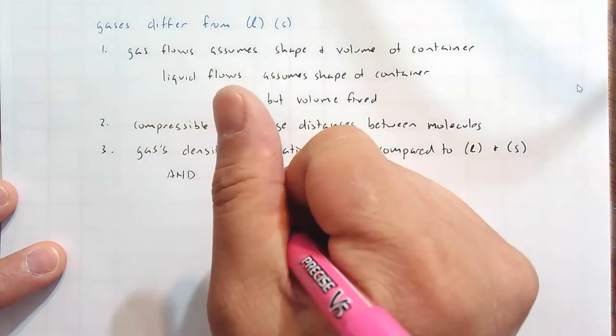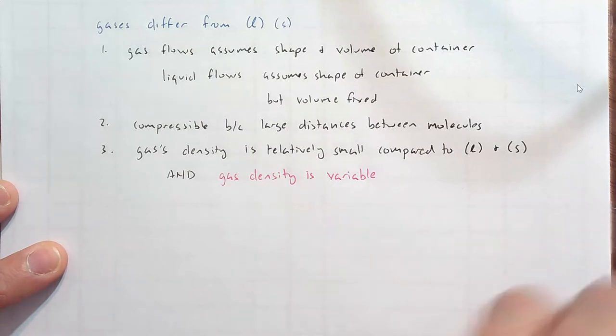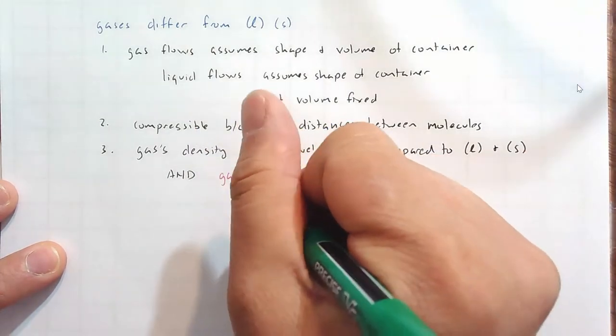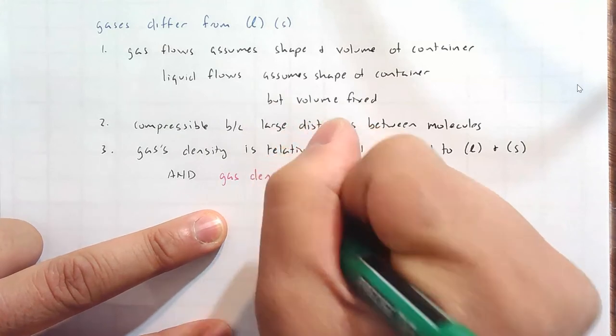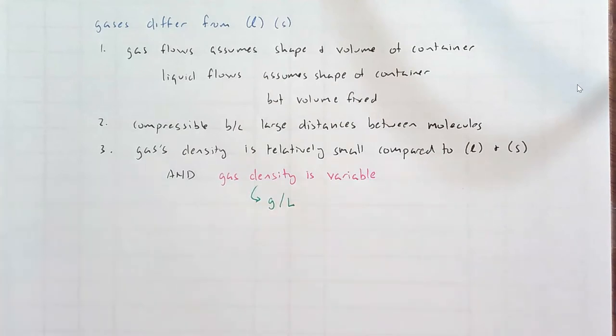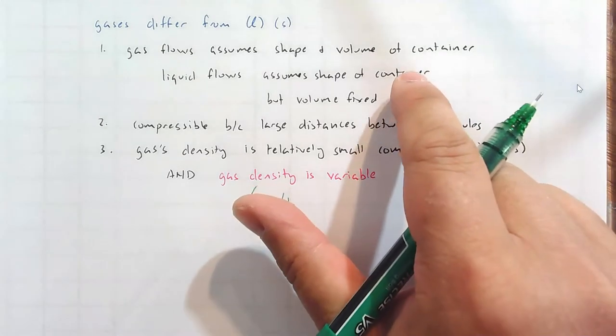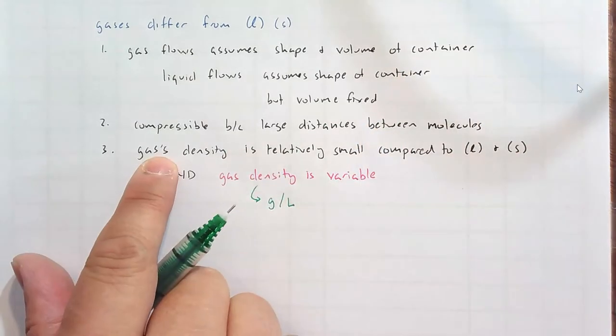We know that density, the units are going to be grams per milliliter for solids. But, for gases, it's typically going to be grams per liter. That is typically the units. And, again, the volume can change pretty readily because it fills the shape of the container, the volume of the container. But, also, gases can be compressible.